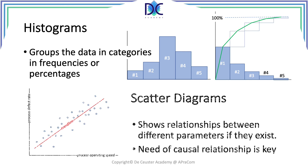We also have scatter diagrams with a trend line. This can show a positive relationship, a negative relationship, or different possibilities. The key thing is: even if there appears to be a relationship when looking at those points, it is very important to determine whether there is a causal relationship or not.